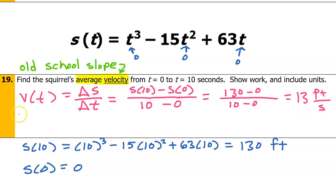Here's an important takeaway: if they say average velocity or average acceleration, that means do an old-school slope, like (y₂ − y₁)/(x₂ − x₁).